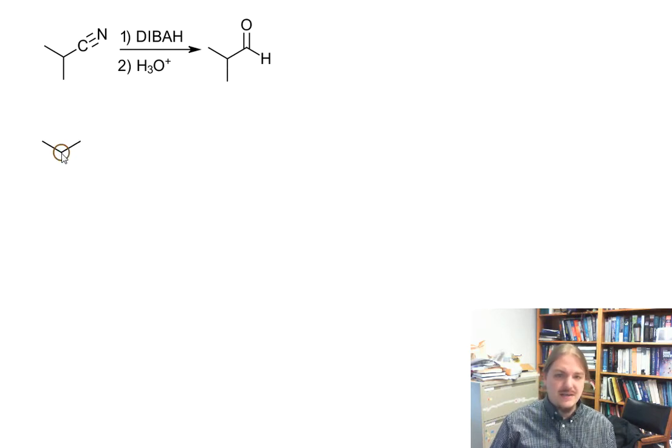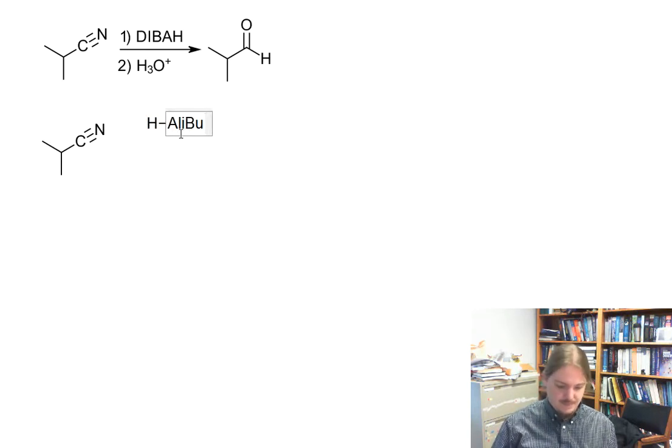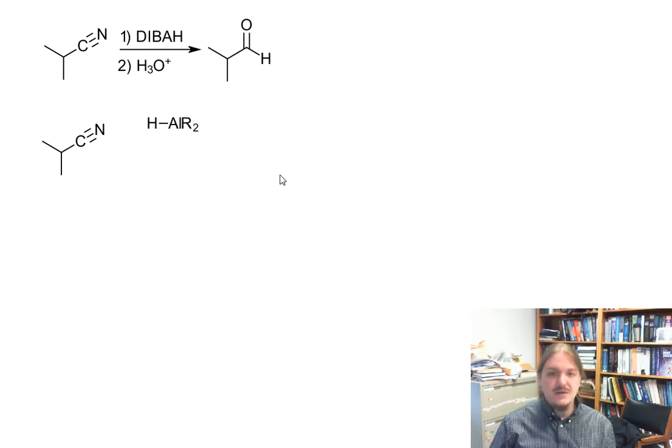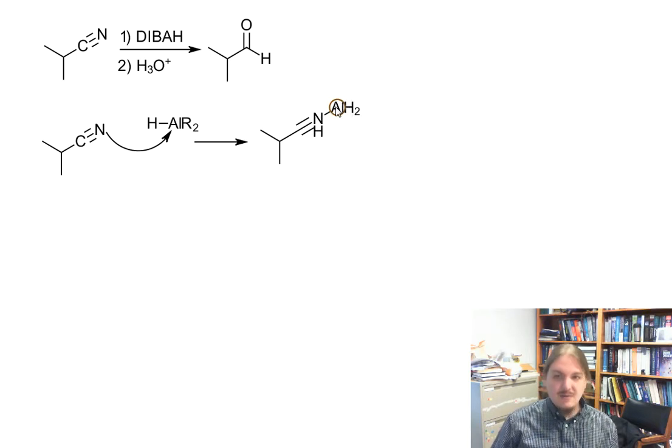And then this reaction is enabled by the fact that diisobutylaluminum hydride... I don't like the way this looks, so let's do ALR2. The diisobutylaluminum hydride is initially electrophilic, and so while the nitrile is not a stellar nucleophile, it can be a nucleophile, there are lone pairs on that nitrogen, and that now reacting with the aluminum forms an intermediate.